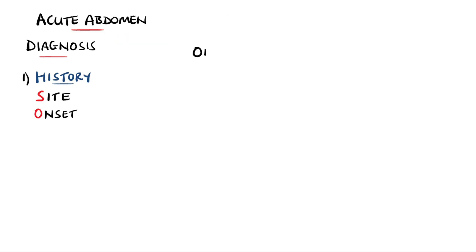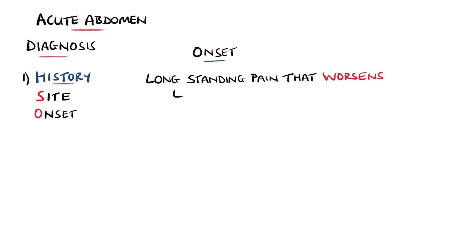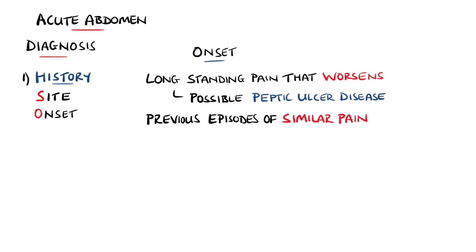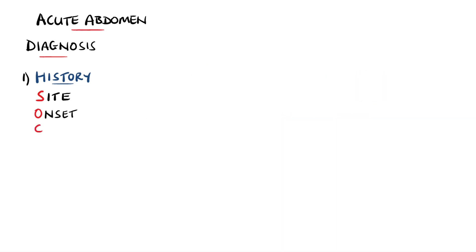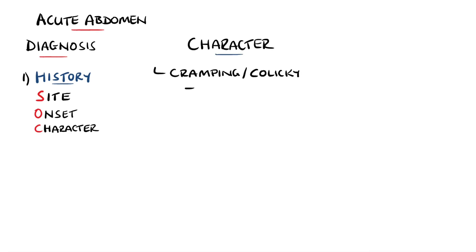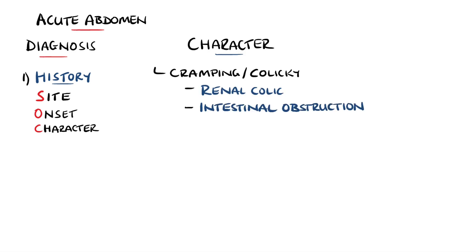We then look at the onset of the pain. A longer standing pain that has worsened can be suggestive of peptic ulcer disease, or if there are previous episodes of a similar pain, that could indicate gallstone disease or diverticular disease. The character of the pain also varies by condition. For example, a cramping, colicky pain may point towards renal colic or an obstruction, while aortic dissection is more likely to be a sudden, sharp pain.